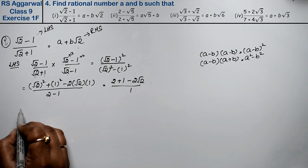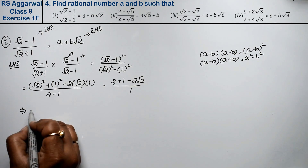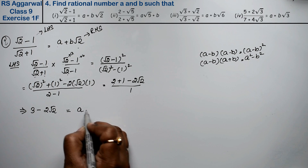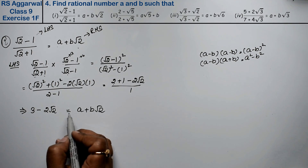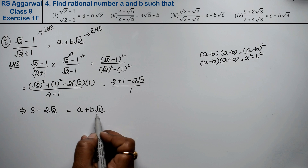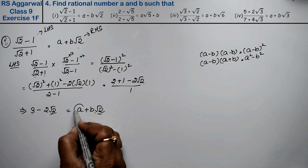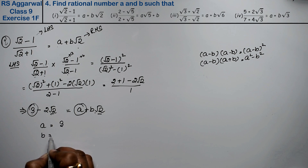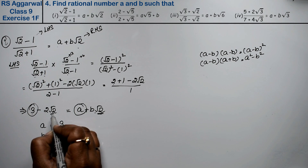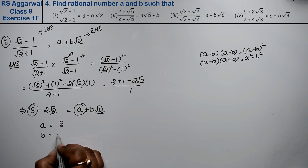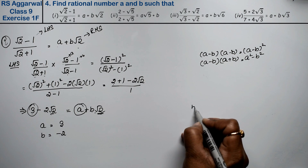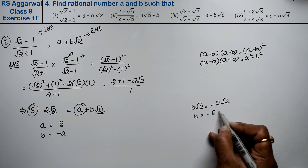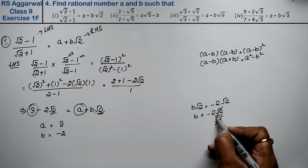The denominator becomes 2 minus 1, which is 1, so we don't need to write it. The numerator simplifies to 3 minus 2 root 2. Comparing with the right-hand side A plus B root 2, we get A equals 3 and B equals minus 2, since B root 2 equals minus 2 root 2, so root 2 cancels.